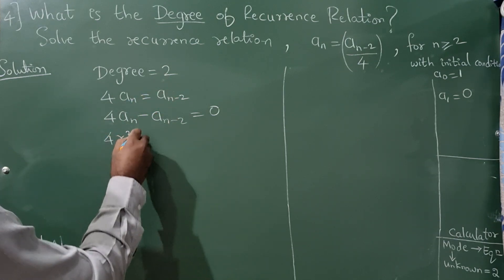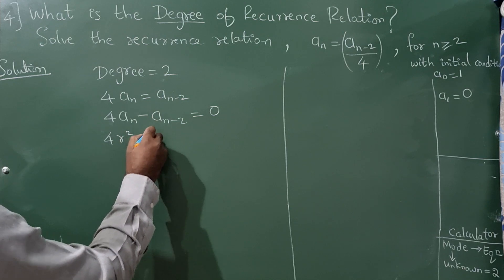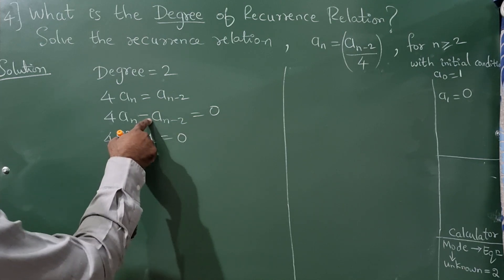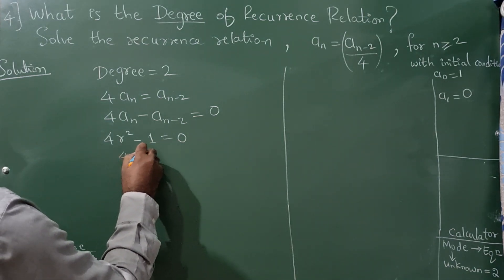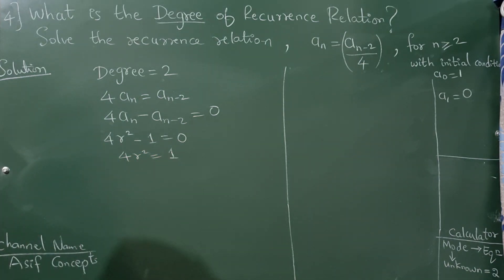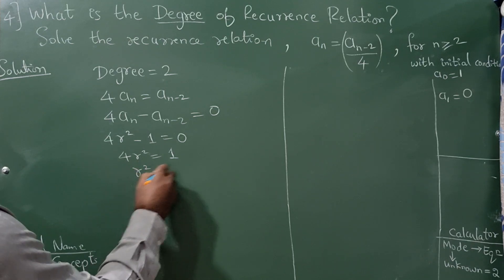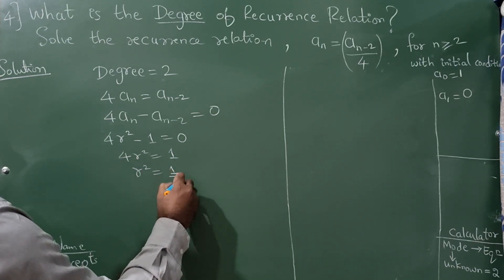The coefficient is only 1. Now take this -1 on the other side so it will become r² = 1/4.